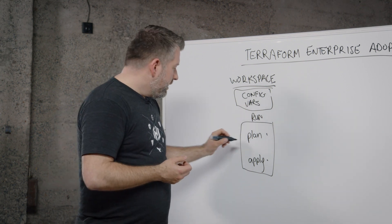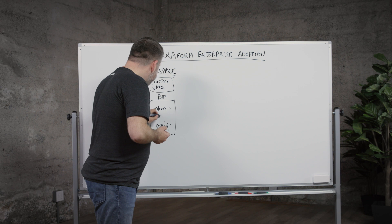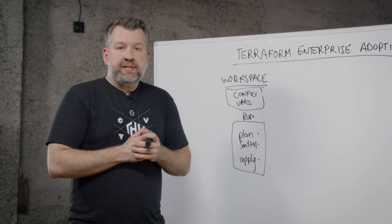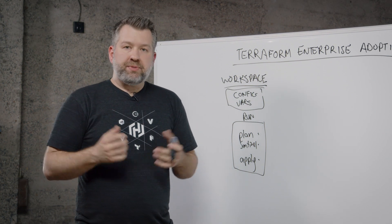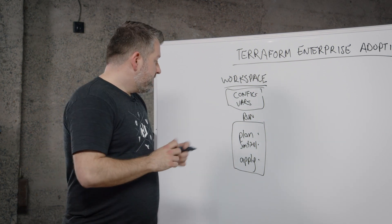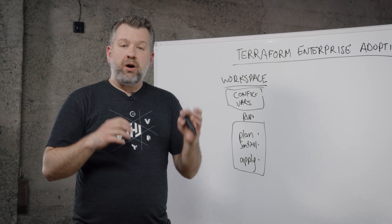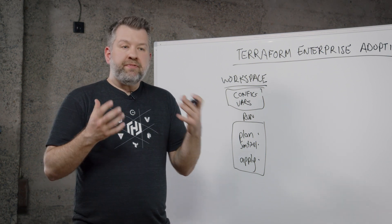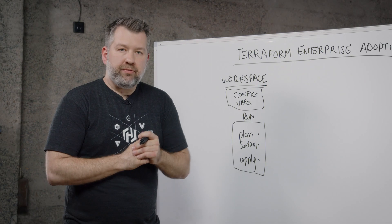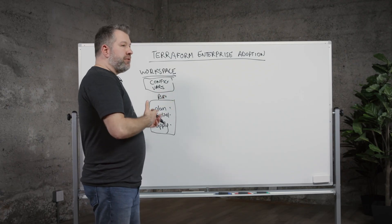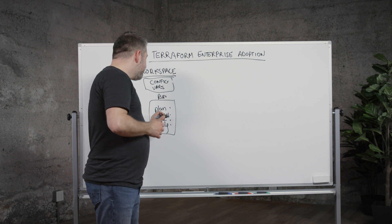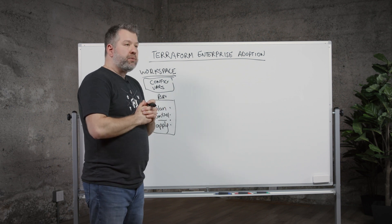Because we've separated the plan and apply phases, we can now serialize through these and add additional steps. In Terraform Enterprise, we also add a phase for Sentinel. Sentinel is HashiCorp's policy-as-code framework — it essentially lets us create guardrails or sandboxes around different things that you can or cannot do with Terraform.